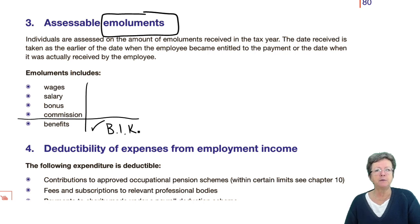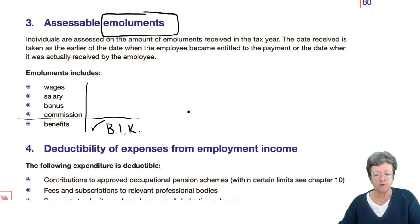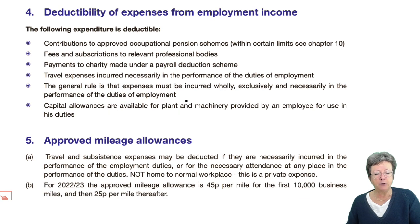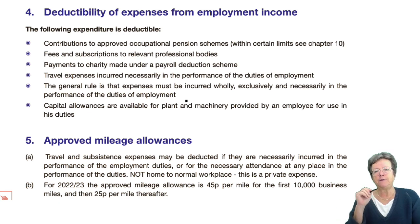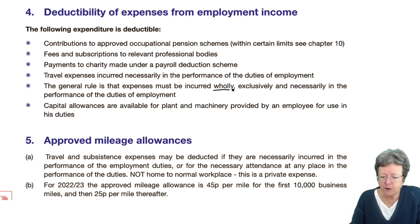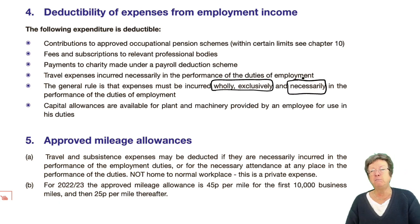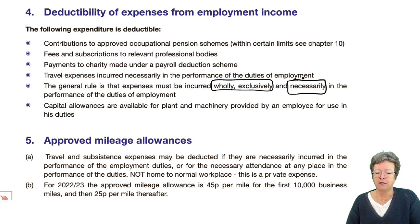Wages and salaries, bonuses, commissions — those are things that you will be given; it's your salary and things received while you're entitled to be working there. You are able to deduct certain expenses. When we looked at trade expenses, we only had two words — wholly and exclusively. This chapter has an extra word: necessary. That means that most of the expenses that self-employed people can claim, employees can't, because it's not necessary.